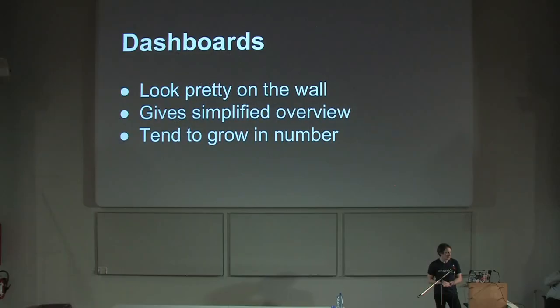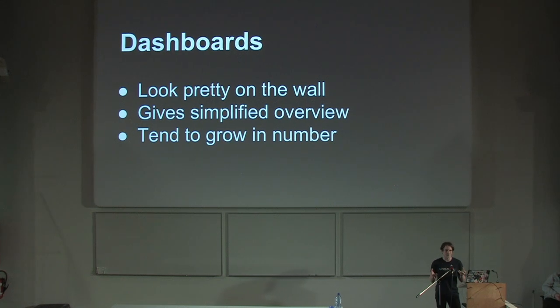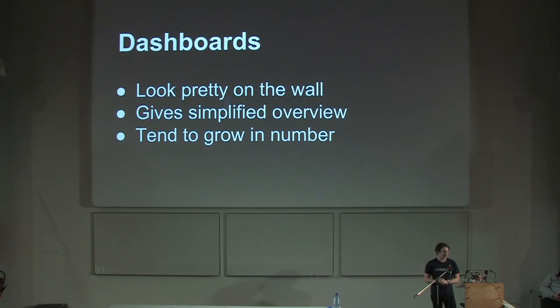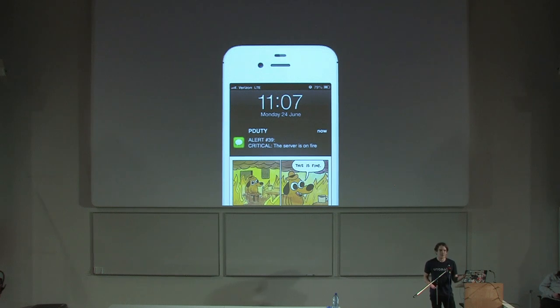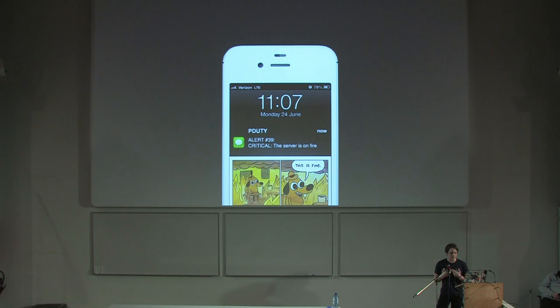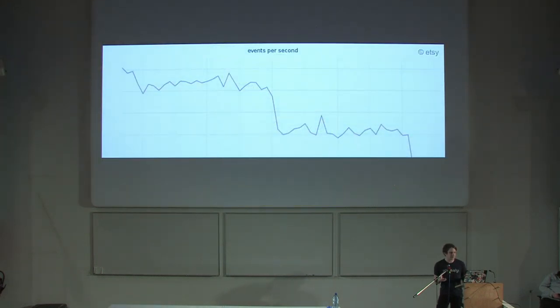One thing that we've all done is just put metrics up on a dashboard on the wall. It looks pretty and gives you a simplified overview of what's going on. However, they tend to grow in number — with every incident we make them more complex because we think we need more of them. We all know the feeling when we're alerted by something: you wake up in the morning or in the night and you see this. We associate it with fear. You take a look at a graph and see there's obviously something going on, but it doesn't really tell you what it is — that blip where something has dropped is just a big manifestation of maybe a longer chain of events.